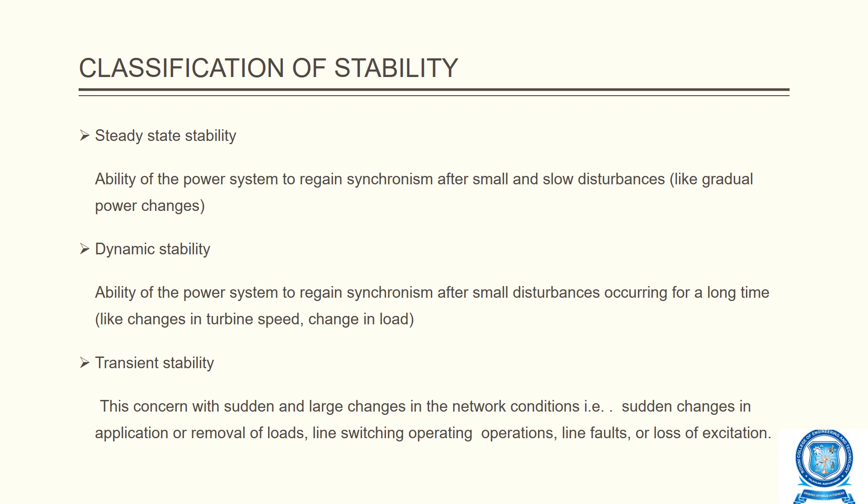There are various types of stability. The first one is steady state stability. Steady state stability is defined as the ability of a power system to remain or return to stable operation when it is subjected to small disturbances. The power system has steady state stability if it can regain synchronous speed after a small disturbance. Examples include normal load variations or small load changes.